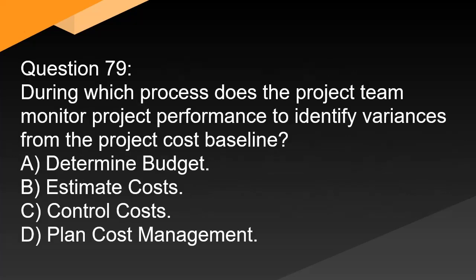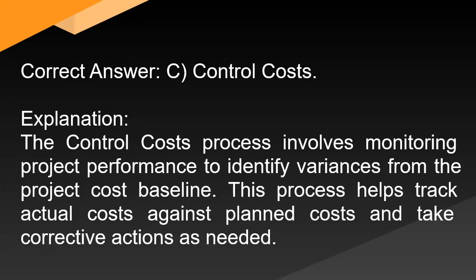Question 79: During which process does the project team monitor project performance to identify variances from the project cost baseline? A. Determine budget. B. Estimate costs. C. Control costs. D. Plan cost management. Correct answer: C. Control costs. Explanation: The control costs process involves monitoring project performance to identify variances from the project cost baseline. This process helps track actual costs against planned costs and take corrective actions as needed.